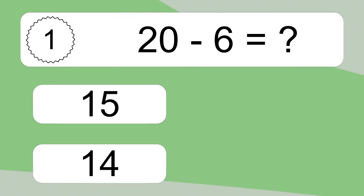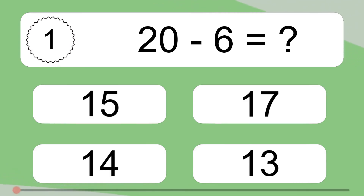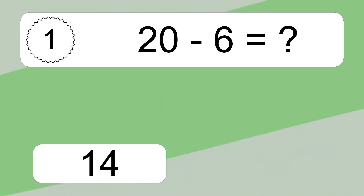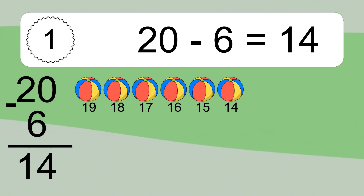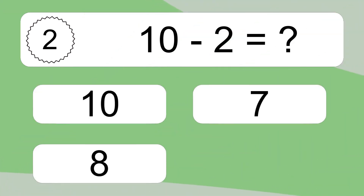20 minus 6 equals what? 20 minus 6 equals 14. Let's count it! 19, 18, 17, 16, 15, 14.